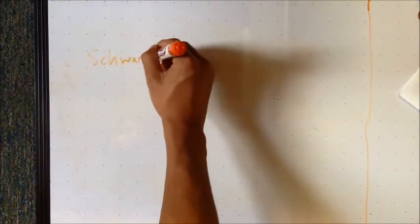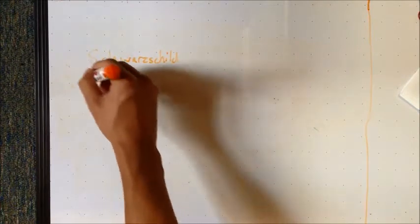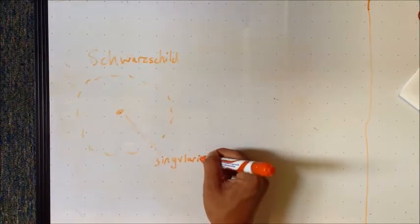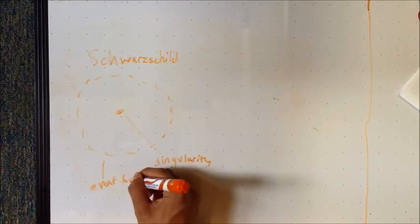Black holes are typically divided into two categories. The first is called the Schwarzschild black hole. It is a simpler case, consisting of only a singularity, the point-like, extremely dense center, and the event horizon.